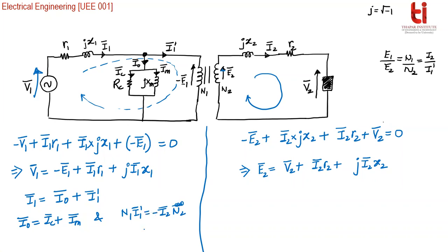I1 dash can be expressed in terms of the current in the secondary winding. The relationship is: I1 dash equals minus N2 by N1 into I2. This is the transformation ratio equation.